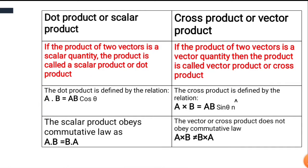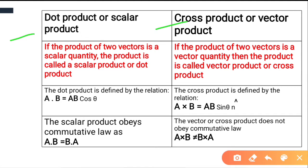Now, students, we are going to discuss the difference between the dot product or scalar product, and the cross product or vector product. This is basically the difference between the two products. The first difference is: if the product of two vectors is a scalar quantity, the product is called scalar product or dot product.